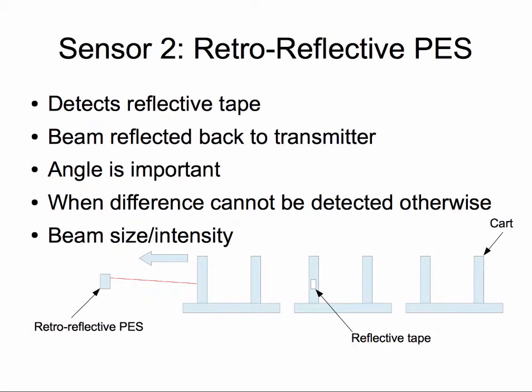The second sensor is the retro-reflective photo-eye sensor. This sensor detects the presence of reflective tape when the light it emits is reflected back to the source. That is why the angle at which the sensor is shooting toward the reflective tape is important. Advanced technology has allowed better detection in recent years, but I only recommend this if your reflective tape will stop right in front of your sensor before the detection takes place. The beam size and intensity can be adjusted based on the distance so that it is only shooting at the detection area and most of the beam is reflected back.